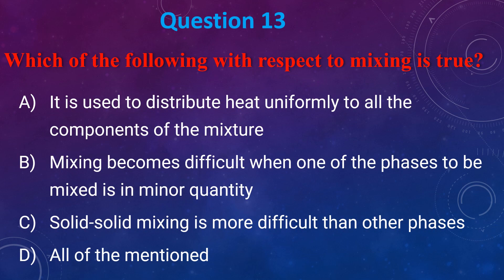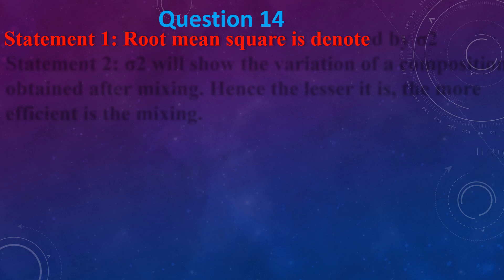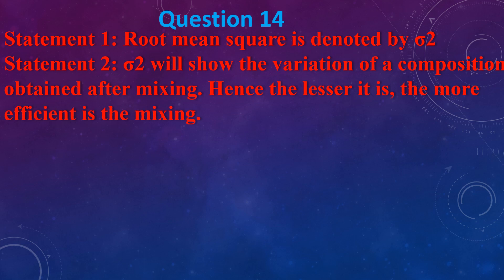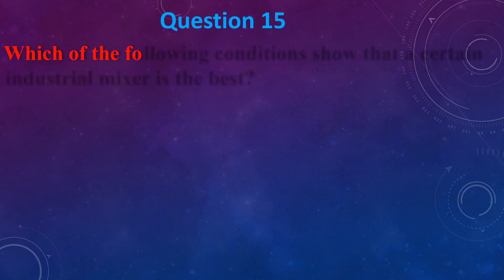Mixing options: (a) It is used to distribute heat uniformly to all components of the mixture, (b) Mixing becomes difficult when one phase exists in minor quantity, (c) Solid-solid mixing is more difficult than other phases, (d) All of the mentioned. The answer is (d) all of the mentioned. Statement 1: Root mean square (RMS) is the standard deviation. Statement 2: The variation of composition obtained after mixing — lesser is the value, more efficient is the mixing. The answer is (b) True, True.